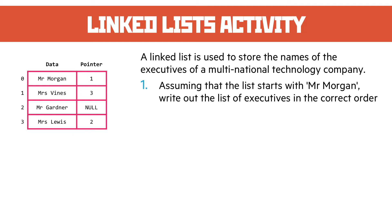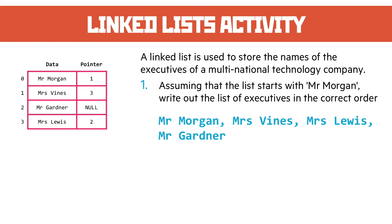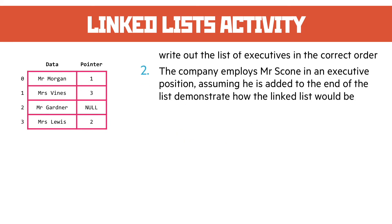Here's the question: a linked list is used to store the names of the executives of a multinational technology company. Question 1: assuming that the list starts with Mr. Morgan, write out the list of executives in the correct order. We pop Mr. Morgan down first, then follow the pointer to index 1 which is Mrs. Vines, follow the pointer from Mrs. Vines to index 3 which is Mrs. Lewis, follow the pointer there to index 2 which is Mr. Gardner, and then there's a null pointer meaning it stops.